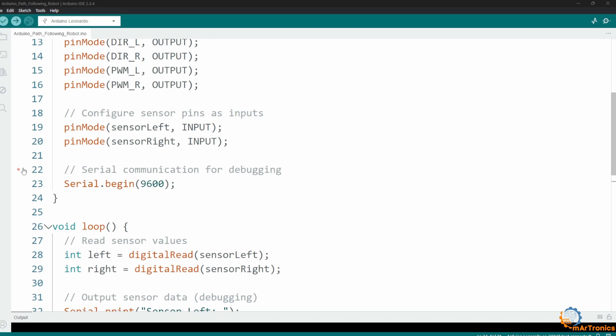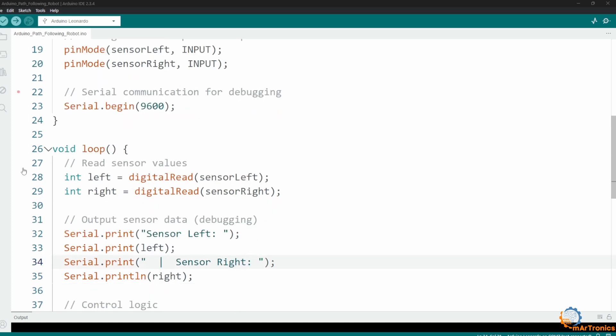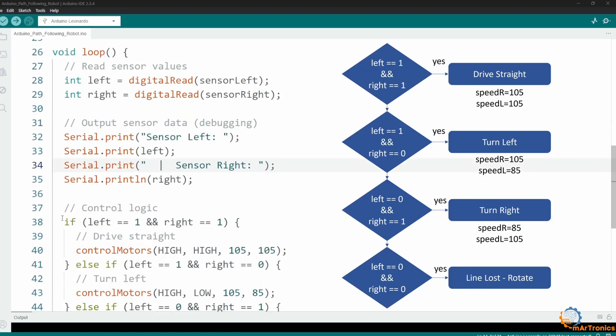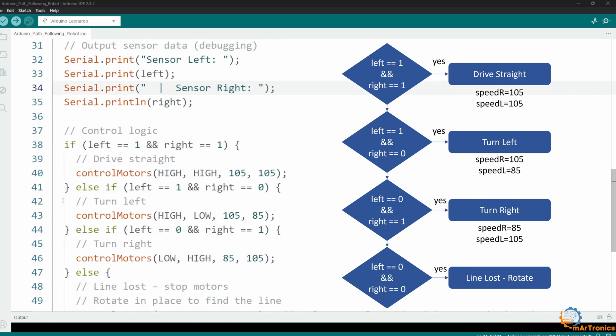In the loop function, which repeats continuously, I defined these two variables, left and right, where the values read from the sensor are stored. Here, the read information is written, and here is the logic, the control logic of the robot. If both sensors read the value of 1, this means the robot is on the white line. At that point, the robot moves forward, with both motors running at the same speed.